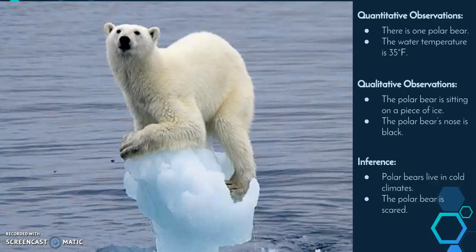So let's practice this. With this polar bear sitting on ice, we can make quantitative, qualitative observations as well as inferences. Some quantitative observations we can make: there is one polar bear — we can see it, we can count it. The water temperature is 35 degrees Fahrenheit. If somebody measured the water and it showed 35 degrees Fahrenheit, we would know that is fact, and that is a quantitative observation that uses numbers.